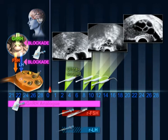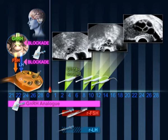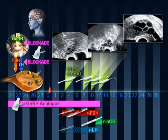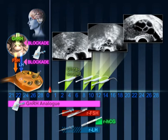When at least 3 follicles have grown to the size of at least 18mm, final follicular maturation is triggered with the hormone HCG. The ova that are within the follicles will begin to mature. Oocyte recovery is undertaken 36 hours later.